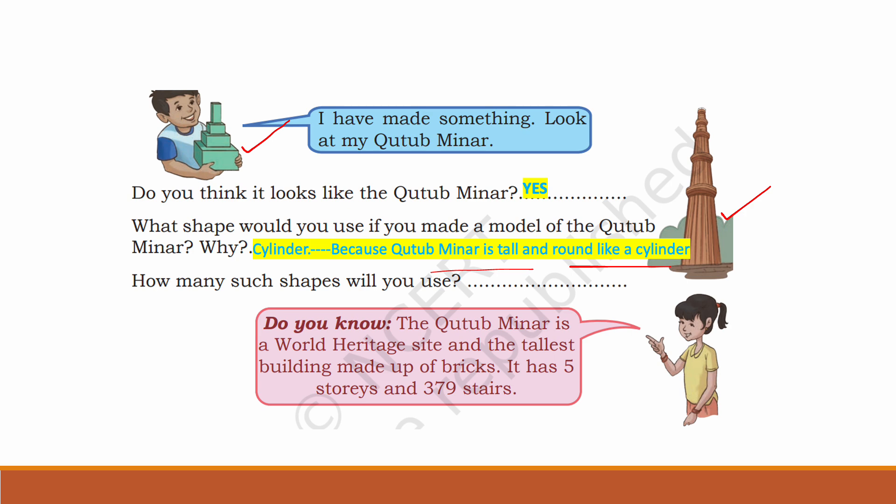See this picture. How many such shapes will you use? Five cylinders to show five stories — I have used five cylinders because there are five stories.